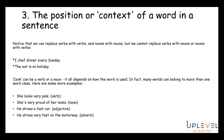In English, many words can belong to more than one word class depending on use. 'She looks very pale' — looks is a verb. 'She's proud of her looks' — looks is a noun referring to physical appearance. 'He drives a fast car' — fast is an adjective describing the car. 'He drives very fast on the motorway' — fast is an adverb telling us how he is driving. This third strategy is very useful in helping determine how words are used in sentences.